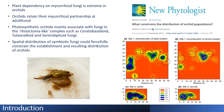Once they germinate, orchids retain this partnership at adulthood, but at different degrees of importance and specialization. The main fungal groups that photosynthetic orchids associate with are the ones from the rhizoctonia-like complexes, such as ceratobasidioid, tulasnelloid, and serendipitoid fungi.